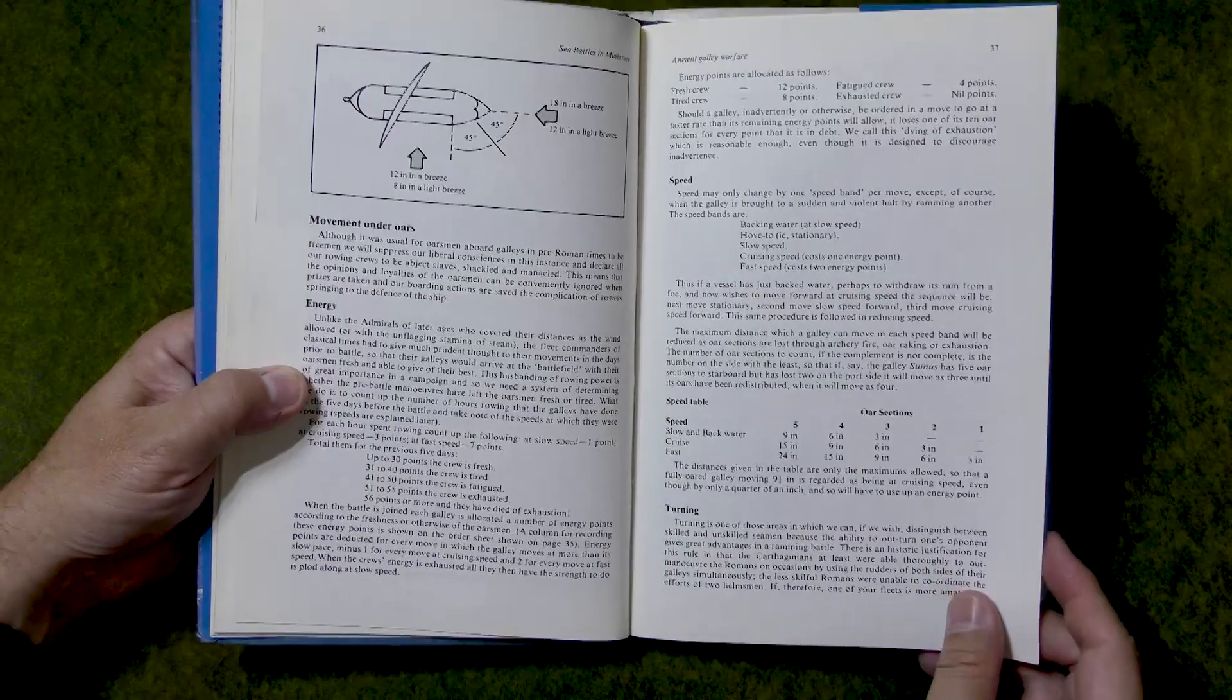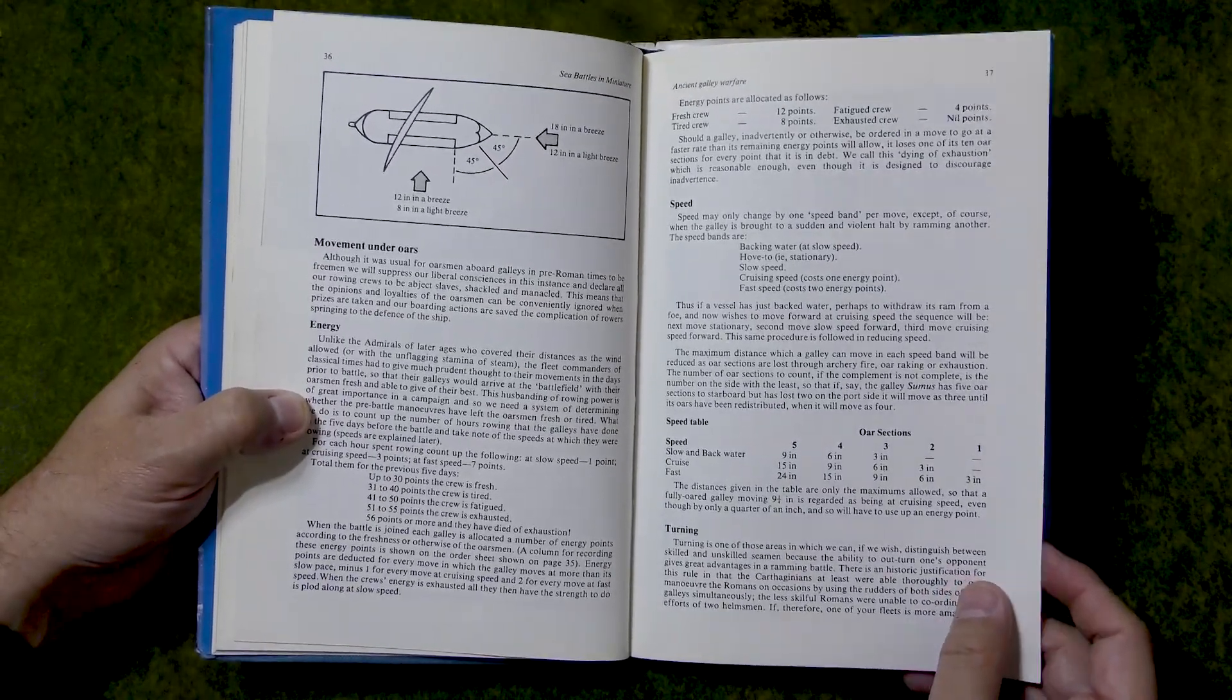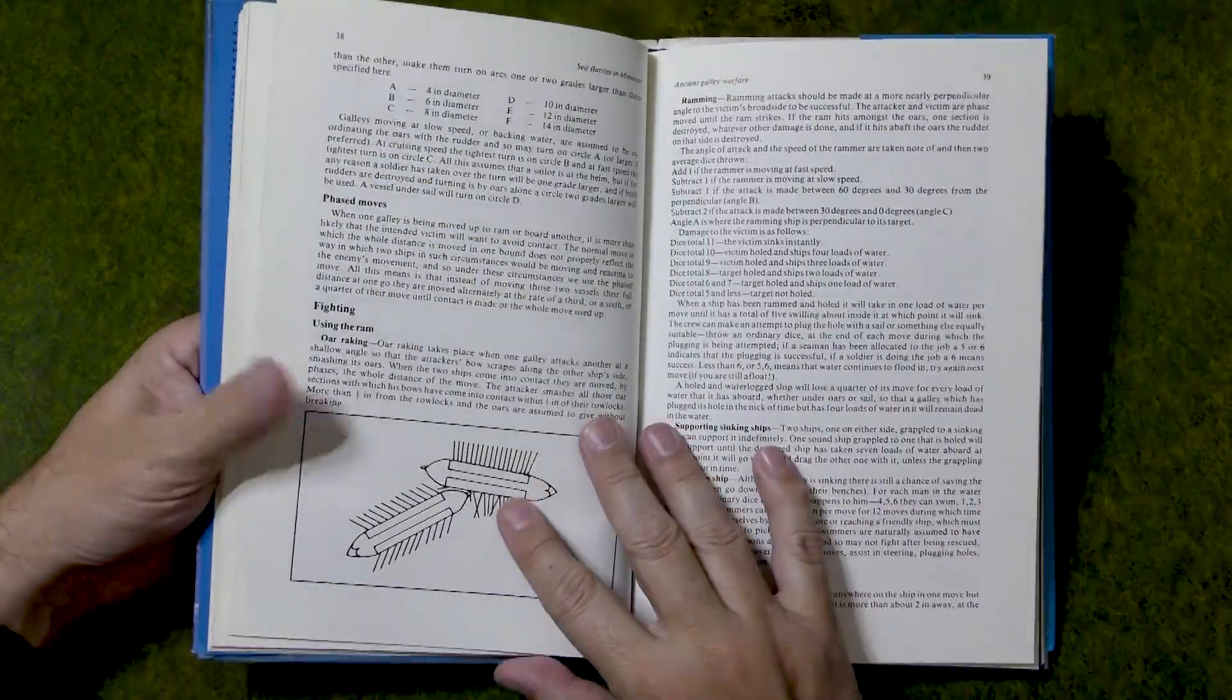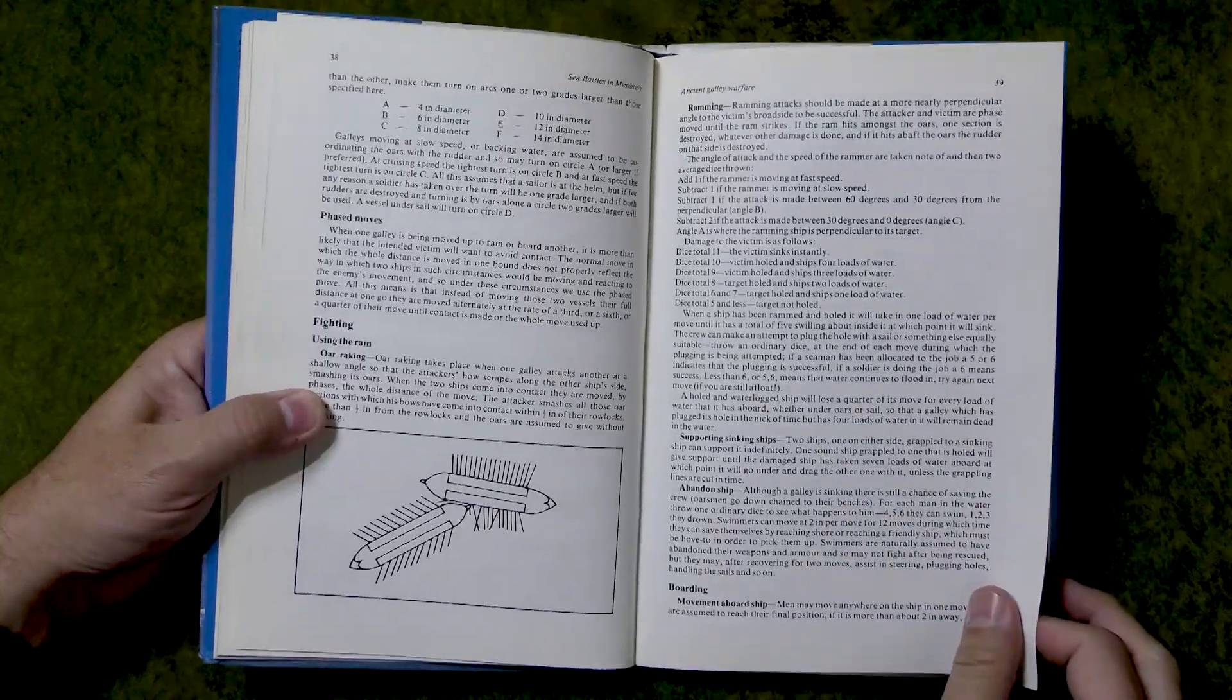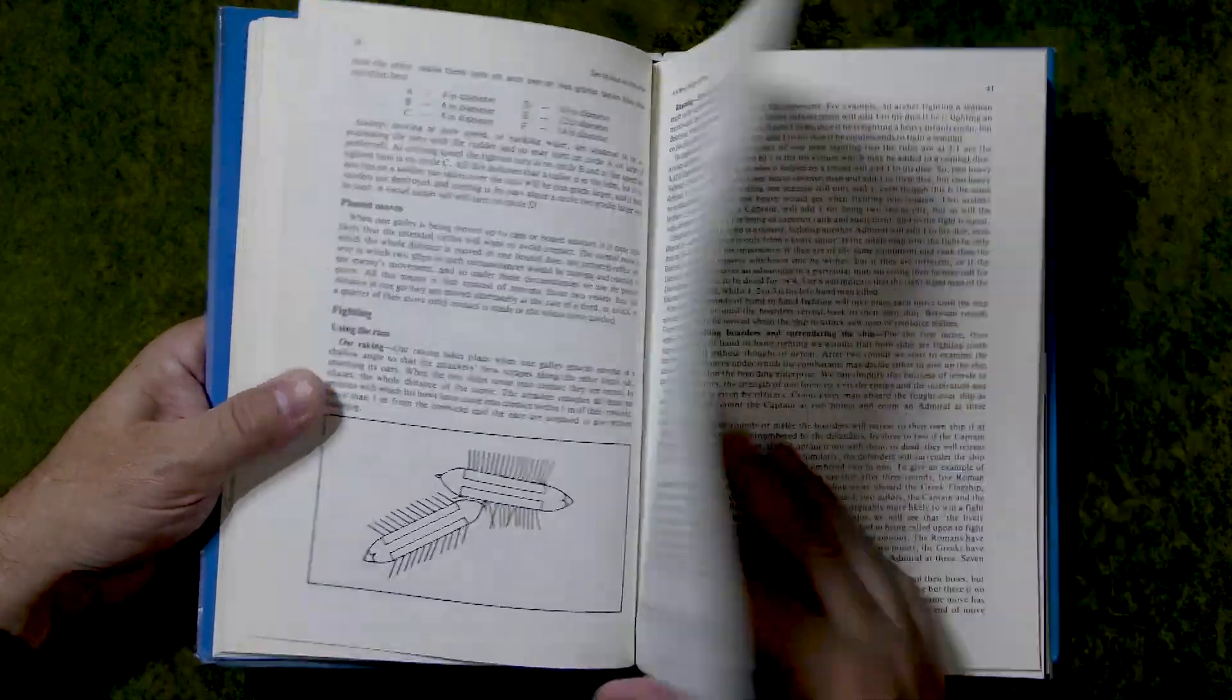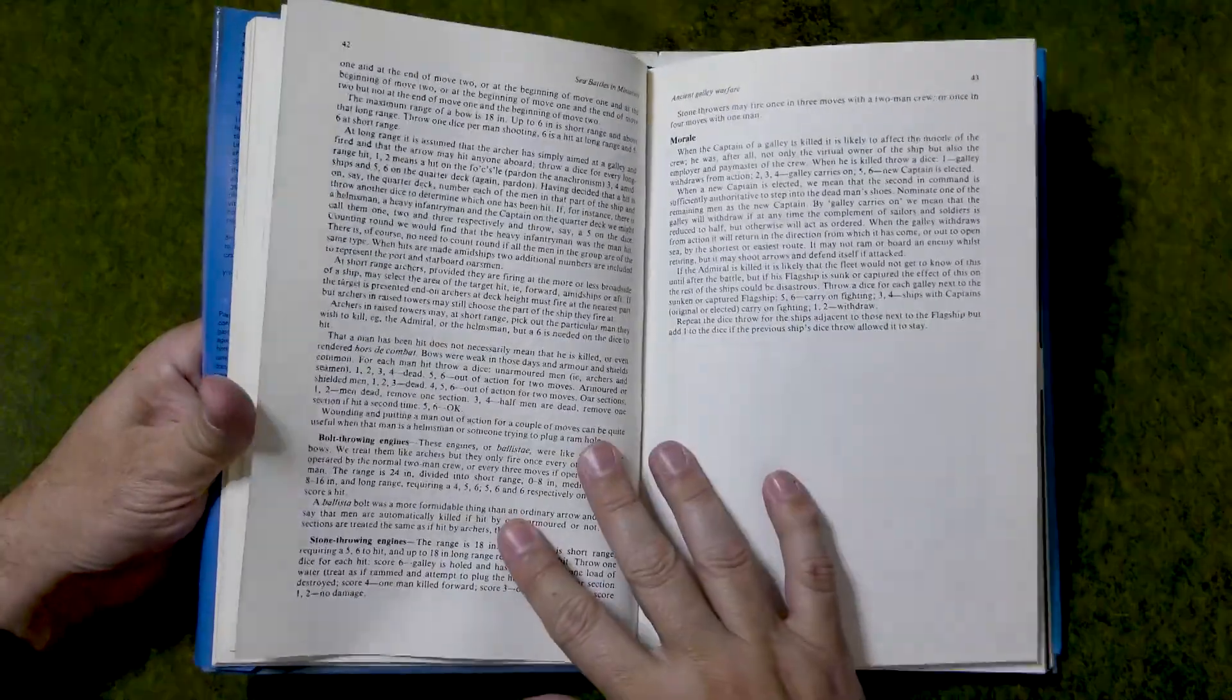These balsa wood, and I remember building them when I was 11 or 12, out of pieces of balsa wood, you could put 15 millimeter Romans on the deck as the crew. So they're larger scale, but you can see, I mean, it's got seven or eight pages of rules.